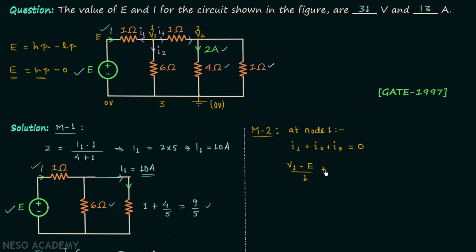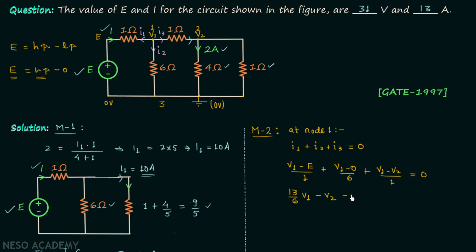Current I2 equals V1 minus 0 divided by 6. Current I3 equals V1 minus V2 divided by 1. Setting the sum to zero and simplifying yields: (13/6)V1 minus V2 minus E equals 0. This is equation number 1.